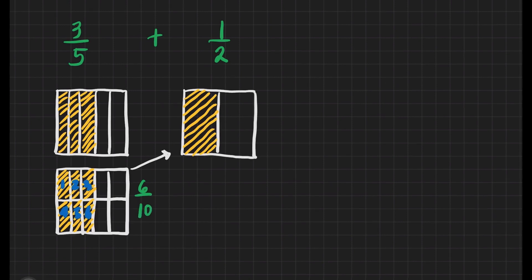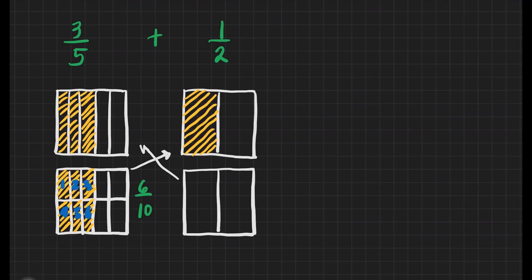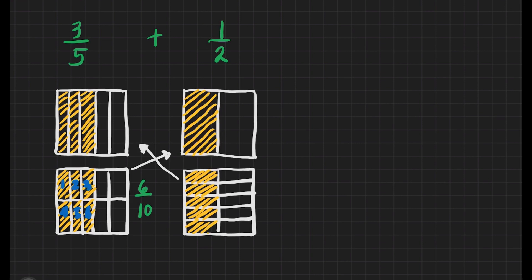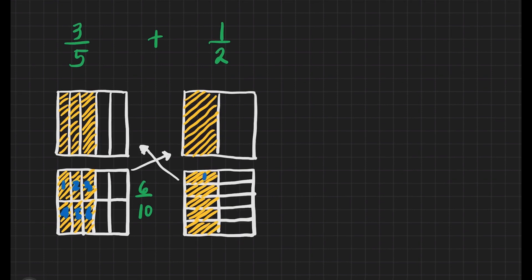Now let's do the second box — we will rename 1/2. We will draw this one and follow the 1/2 at the top. Next is to follow the number of lines and divisions in the first fraction, and how it is divided. We will shade it, and that is going to be — let's count: 1, 2, 3, 4, and 5. It means if we rename 1/2, that's going to be 5 shaded parts out of 10.